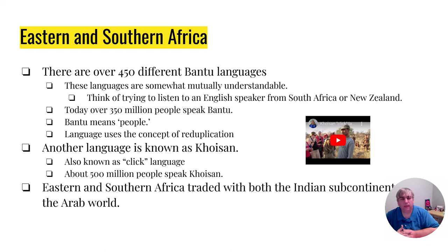The other big language group is known as the Khojasan — that's the click language. Somewhere around 500 million people speak Khojasan or a dialect of it. Depending where the click is in the word, it can change the meaning of the word; it can be a consonant, a syllable, or a placeholder. So it's a very complicated language to learn.